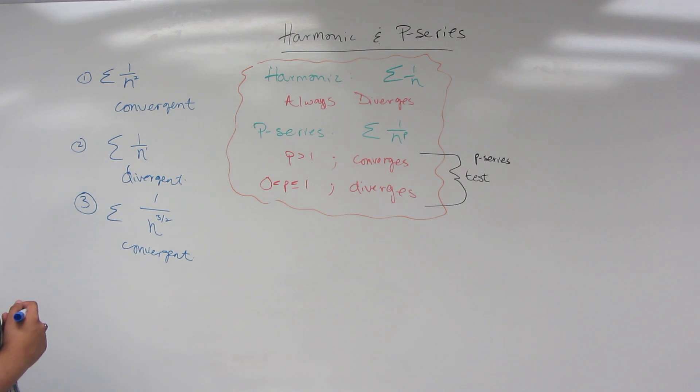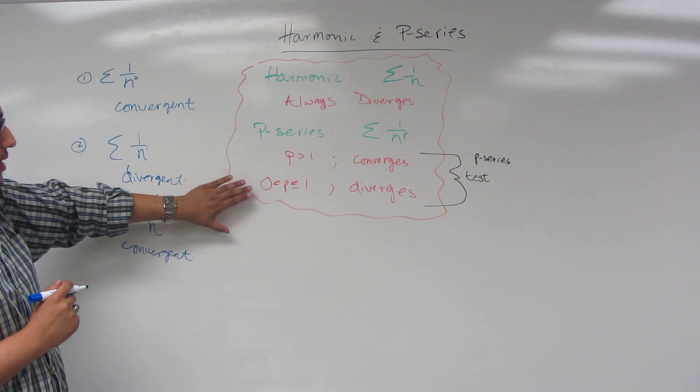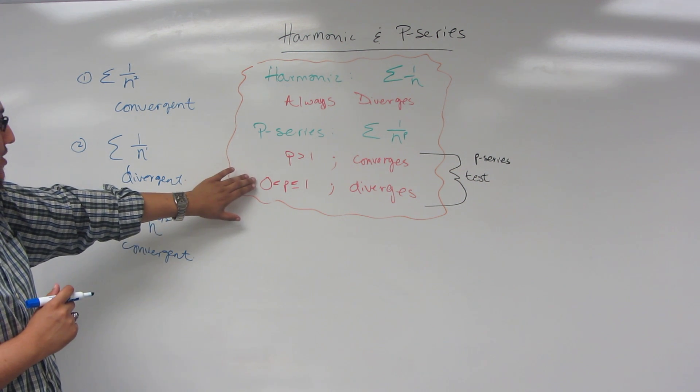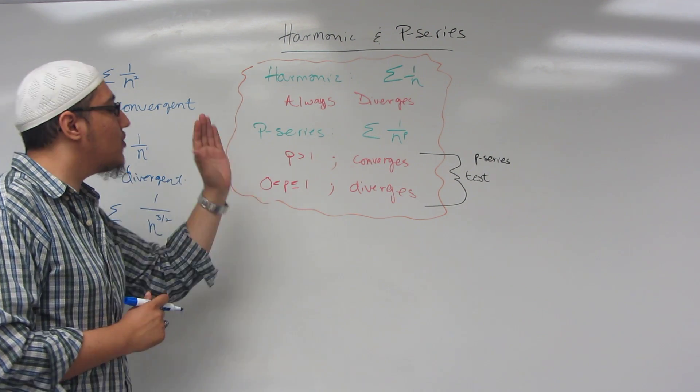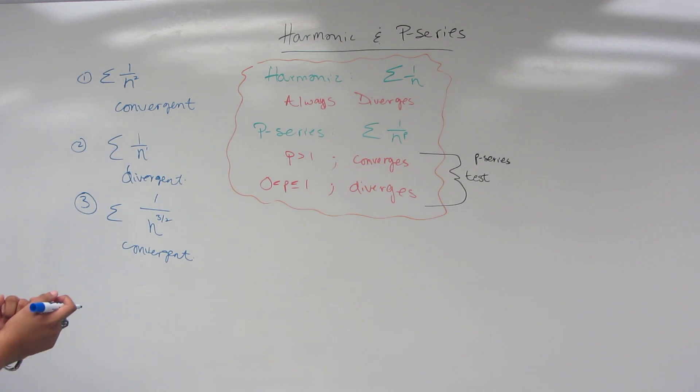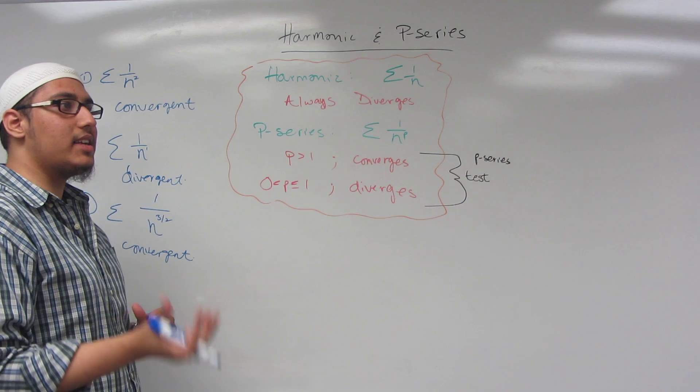Now sometimes students come in and ask me, why is it that this limit here is 0? Why can't it be from negative infinity to 1? Well, my answer is this. If something is less than 0, then essentially it's negative. And if p is negative, then we have a negative exponent.